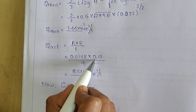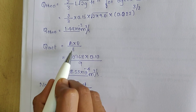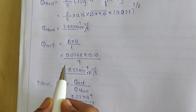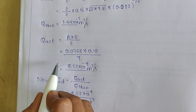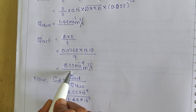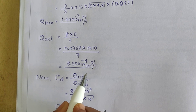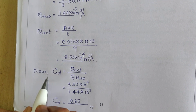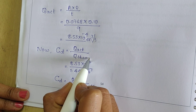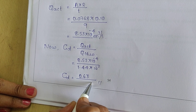The depth of water collected is 0.10 m (10 cm). The time taken for collection was 9 seconds. Substituting these values in the actual discharge formula, we get Q actual as 8.53 × 10⁻⁴ m³/s.